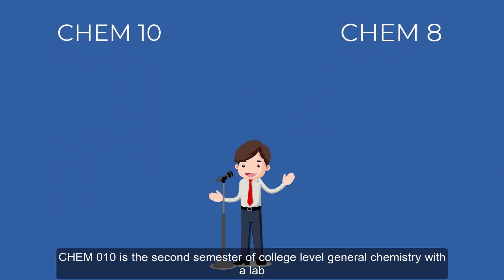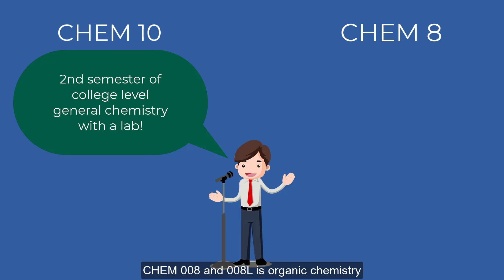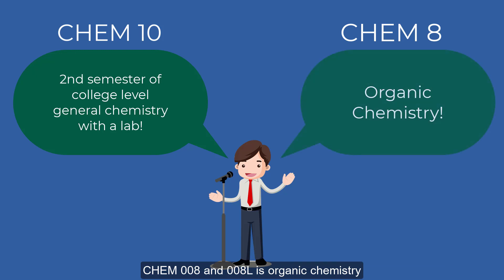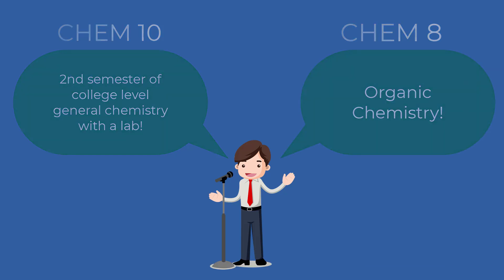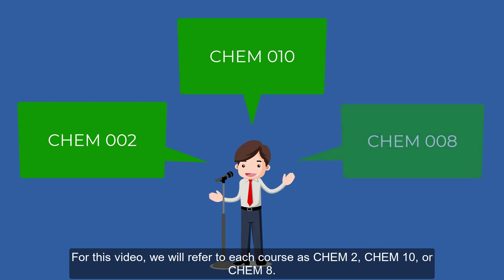Chem 10 is the second semester of college level general chemistry with a lab. Chem 8 and 8 lab is organic chemistry. For this video, we will refer to each course as Chem 2, Chem 10, or Chem 8.